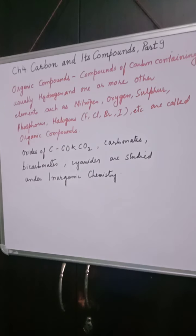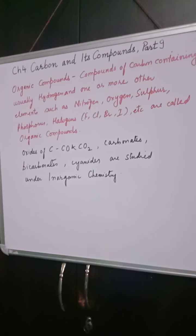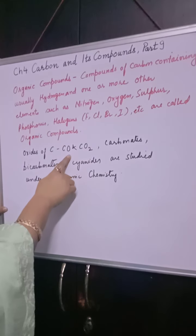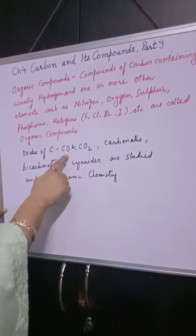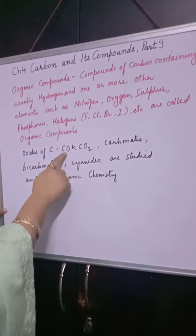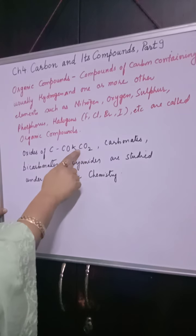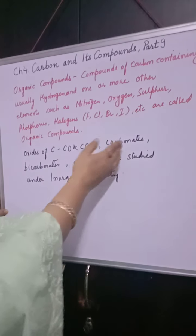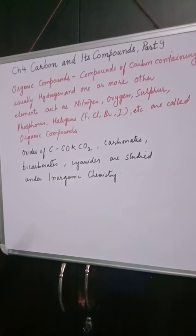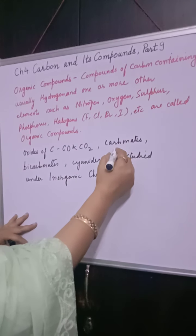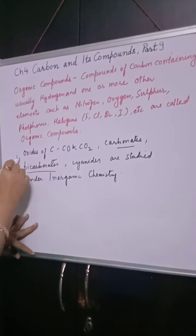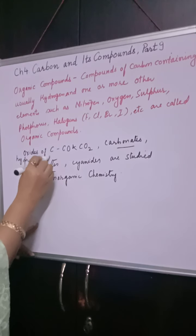However, there is an exception: not every compound containing carbon is studied under organic chemistry. For example, oxides of carbon — carbon monoxide and carbon dioxide — are studied under inorganic chemistry. Similarly, carbonates, bicarbonates, and hydrogen carbonates which we studied in the second chapter are also considered inorganic compounds.